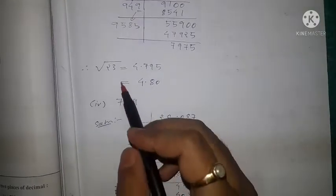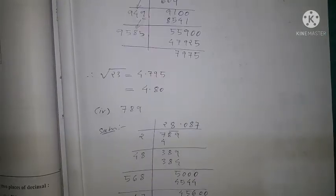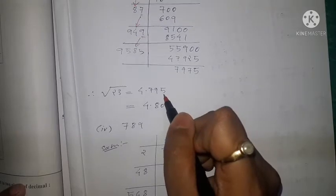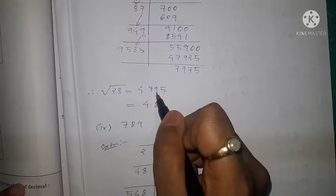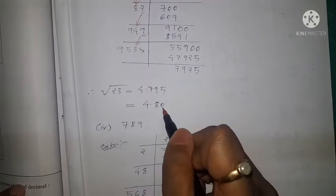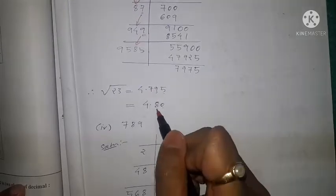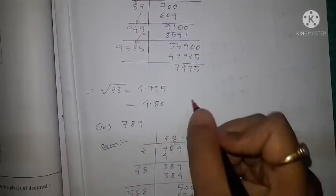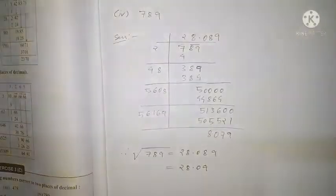The square root of 23 is 4.795. The third digit is 5, so we increase 9 by 1; that becomes 10, so we write 0 and carry 1 to the 7, making it 8. Therefore the answer is 4.80, or simply 4.8.